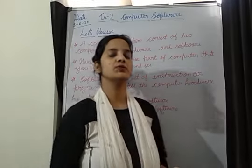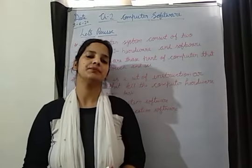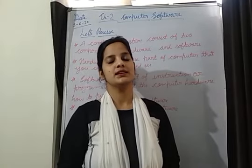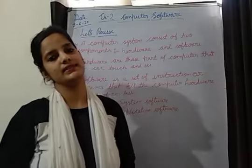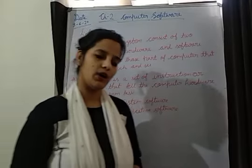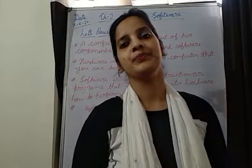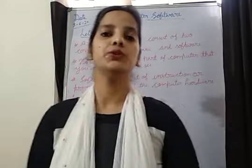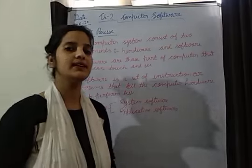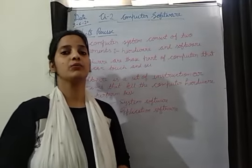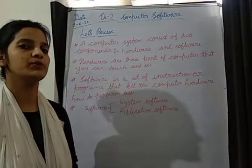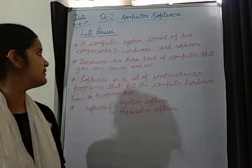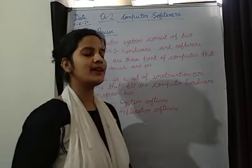In a computer system there are two components: one is hardware and another is software. Hardware is those parts of the computer system that you can easily touch and see — like monitor, mouse, keyboard, CPU, speakers, and CD drive. These all are hardware.